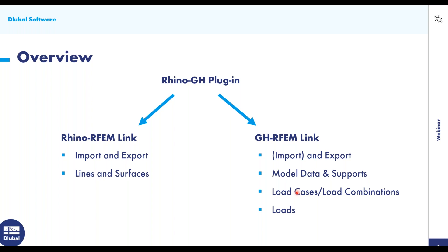With the Grasshopper RFEM link, you can now also import as well as export. You are able to control aspects like model data and supports, and have more control over the structural analysis. Additionally, load cases and combinations can be accounted for, which was a big request from users, along with loads. Not all loads or every feature can be controlled by Grasshopper — we tried to pick the most common ones. If we're missing something, please let us know. It's pretty simple for us to add additional features.